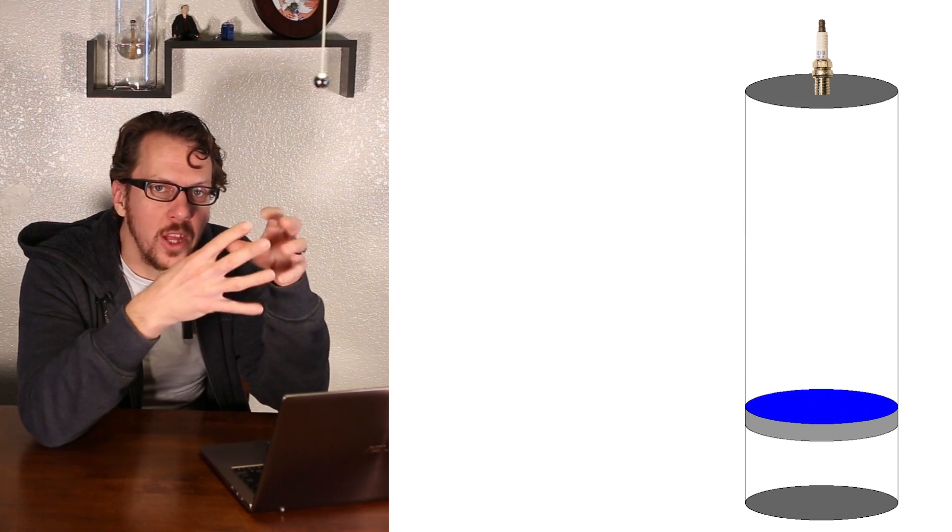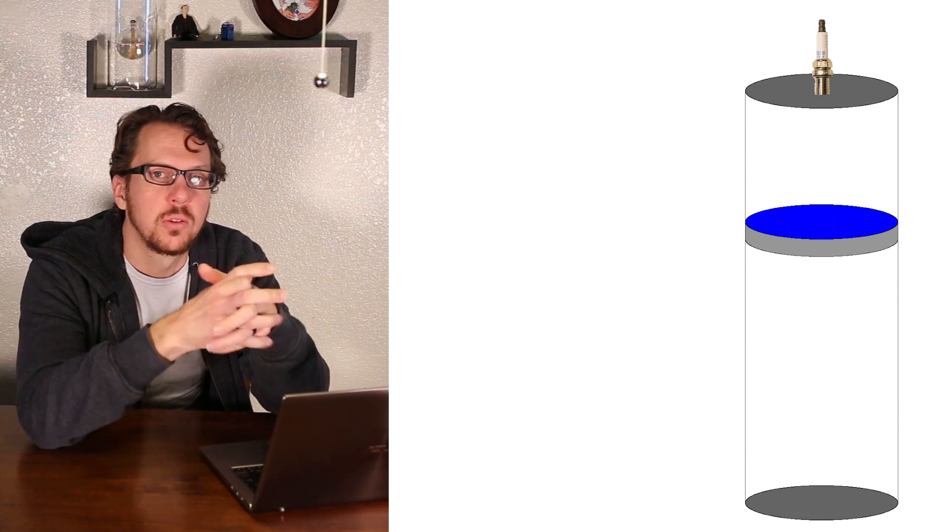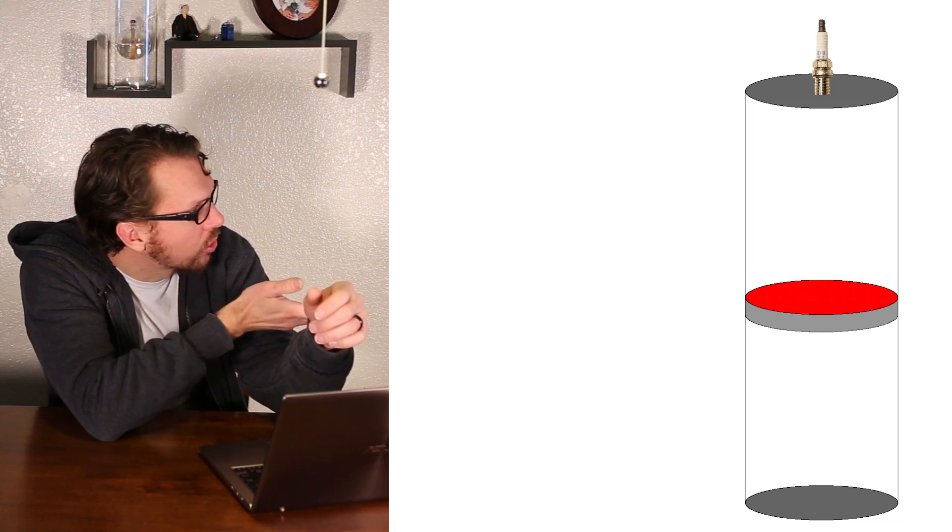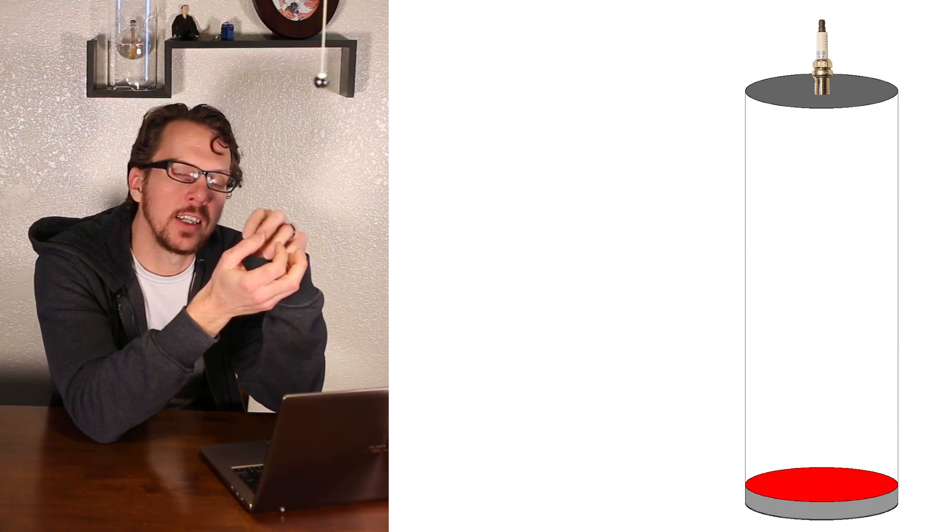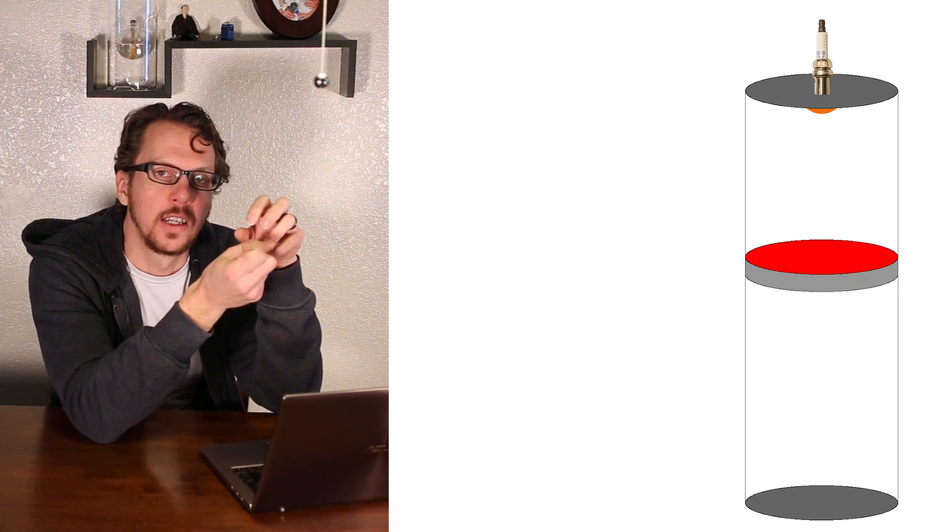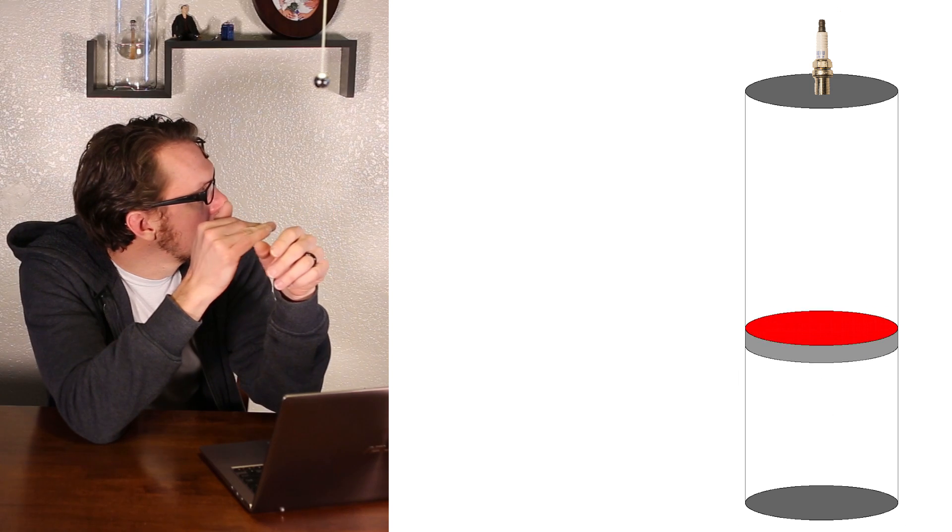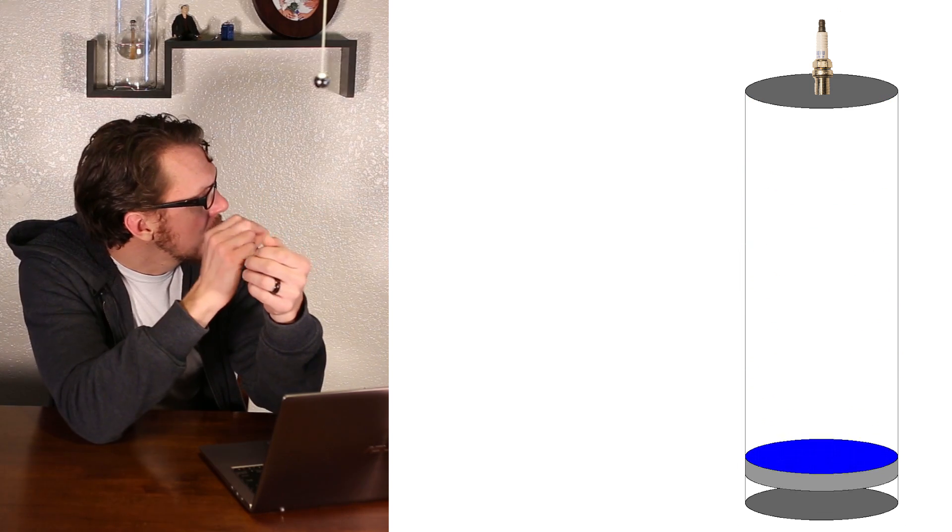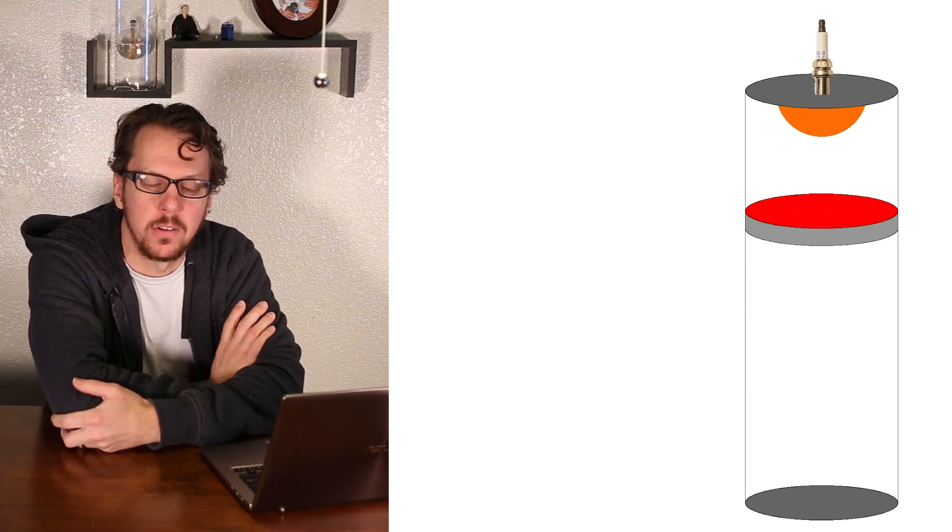Now, when that flame wall expands into the cylinder, it greatly increases the pressure. So you have the cylinder squeezing the gas up at the same time that the ignition of the gas is also increasing the pressure. And if you do this right, both of those things reach their peak a little bit after the piston reaches the top of the cylinder.